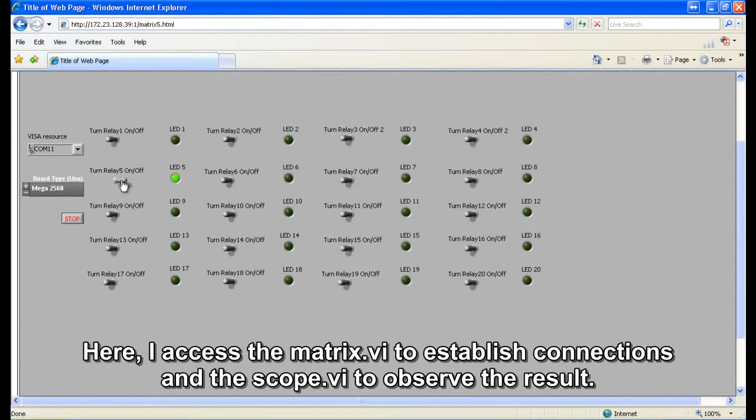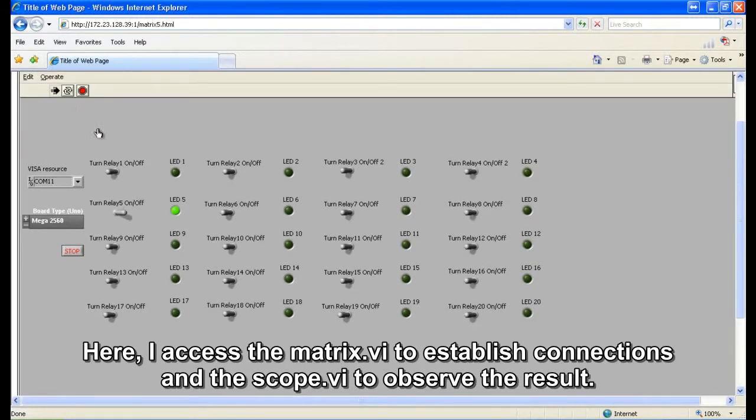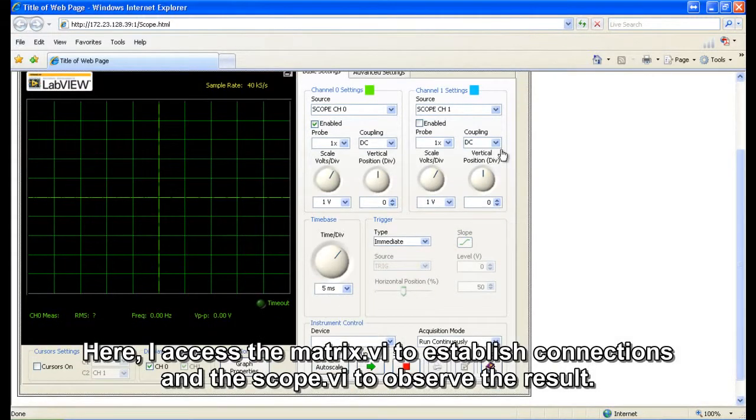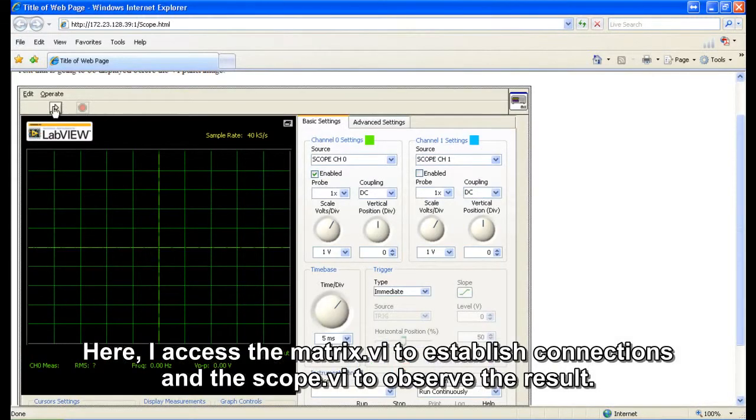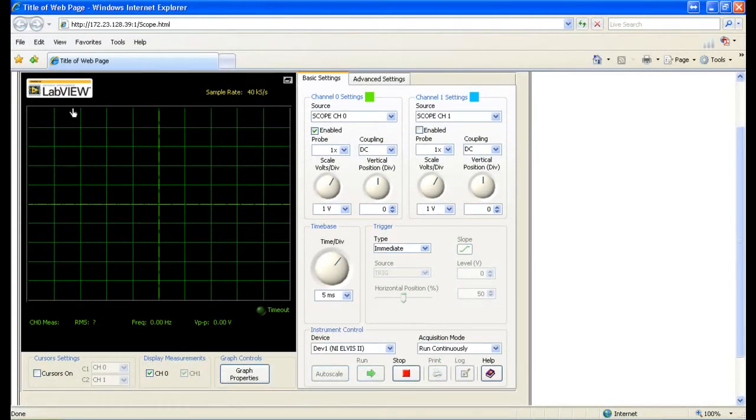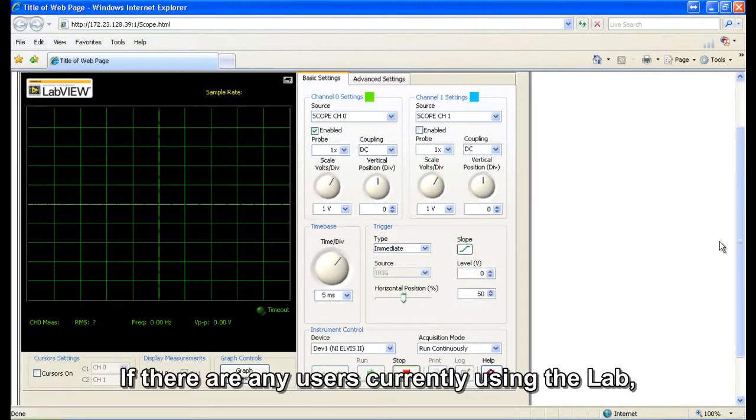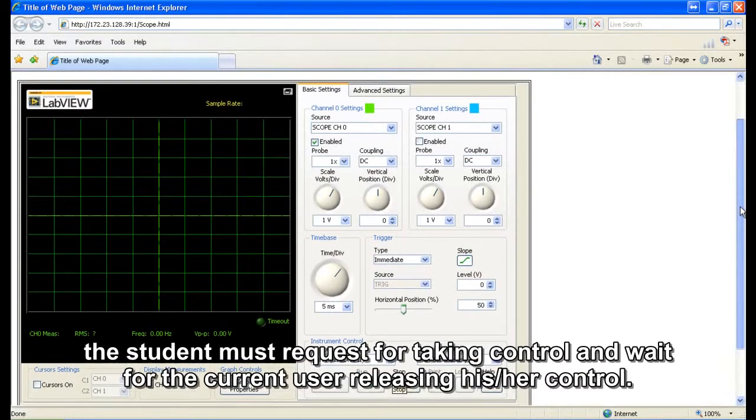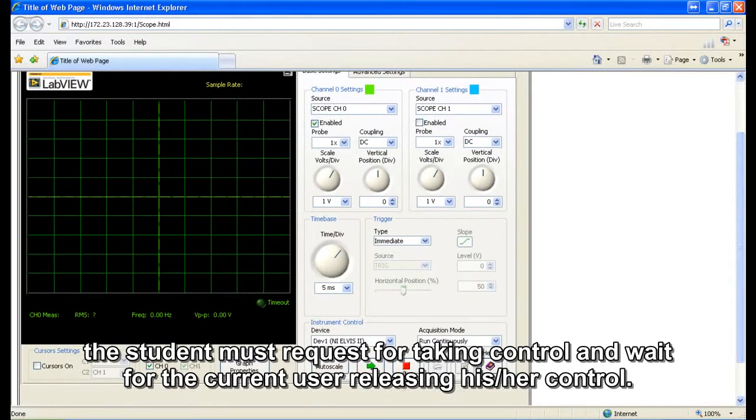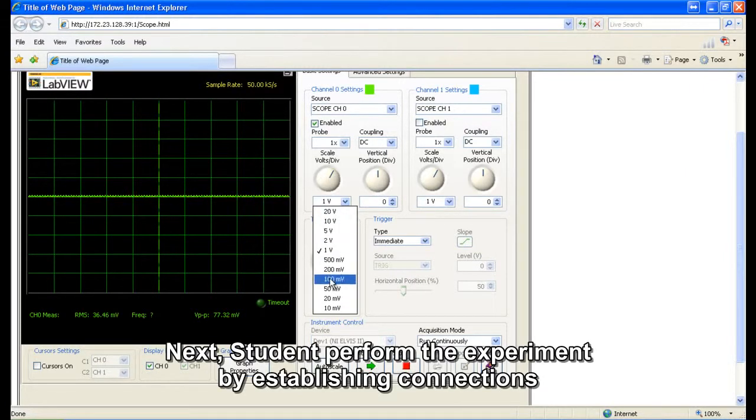Here, I will set the matrix.vi to establish connections and the scope.vi to observe the waveforms. If there are any users currently using the lab, the student must wait for requesting control and wait for the current user releasing their control.